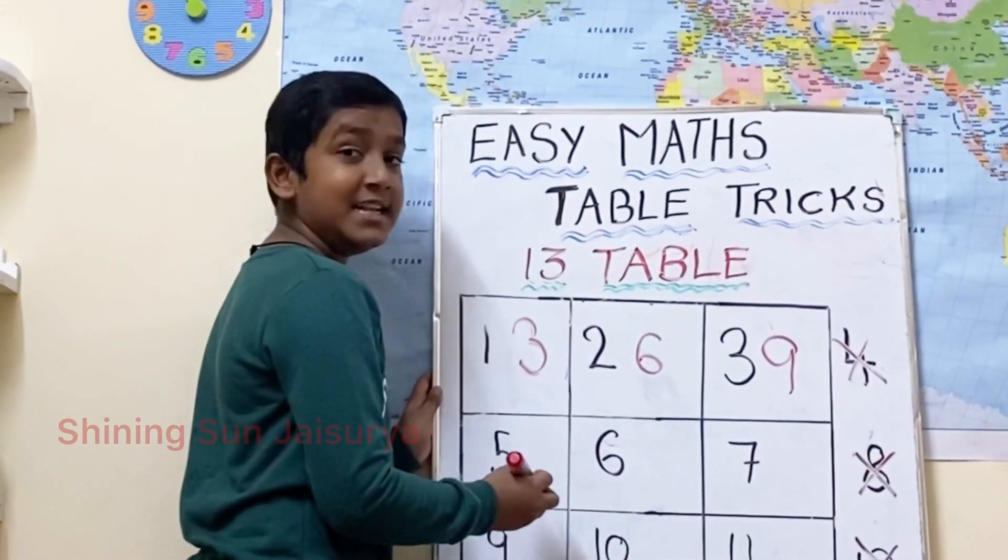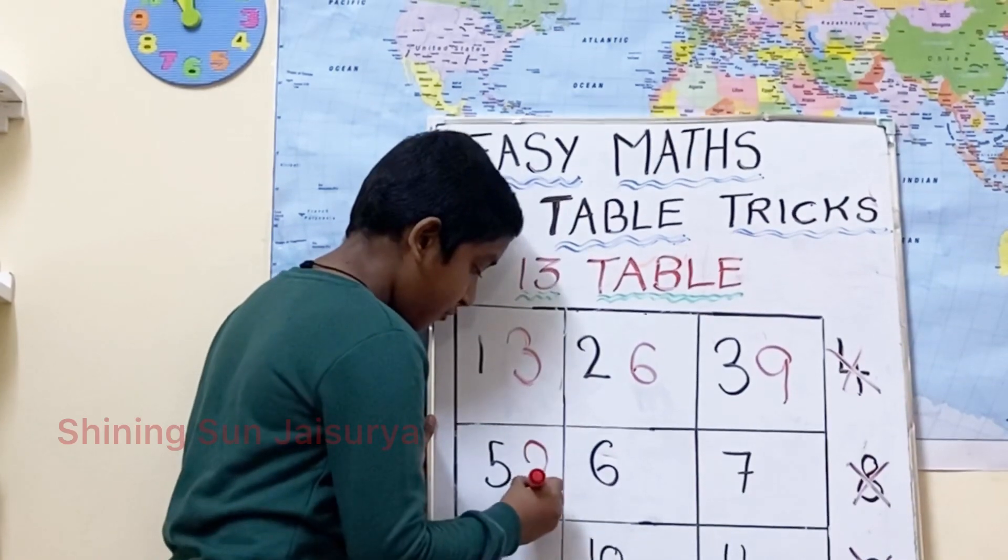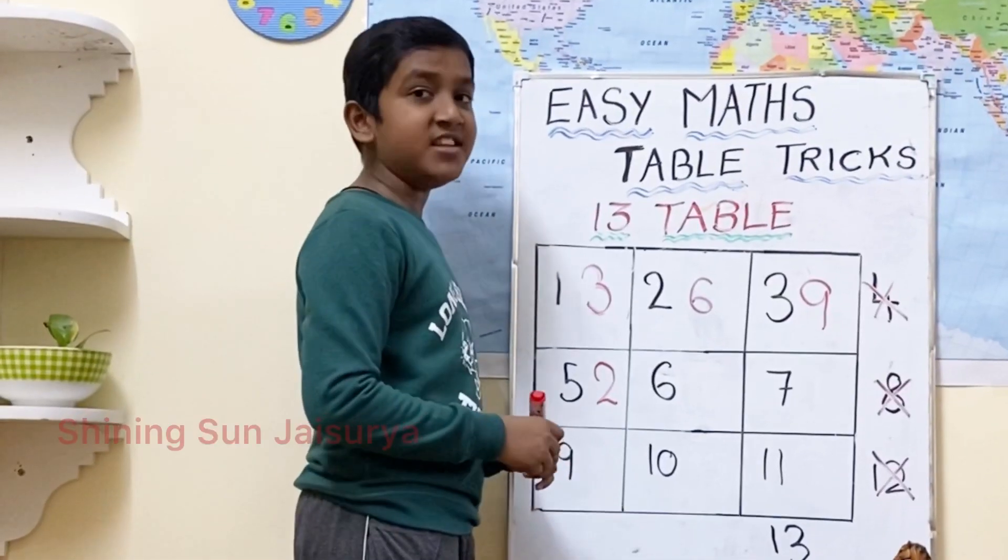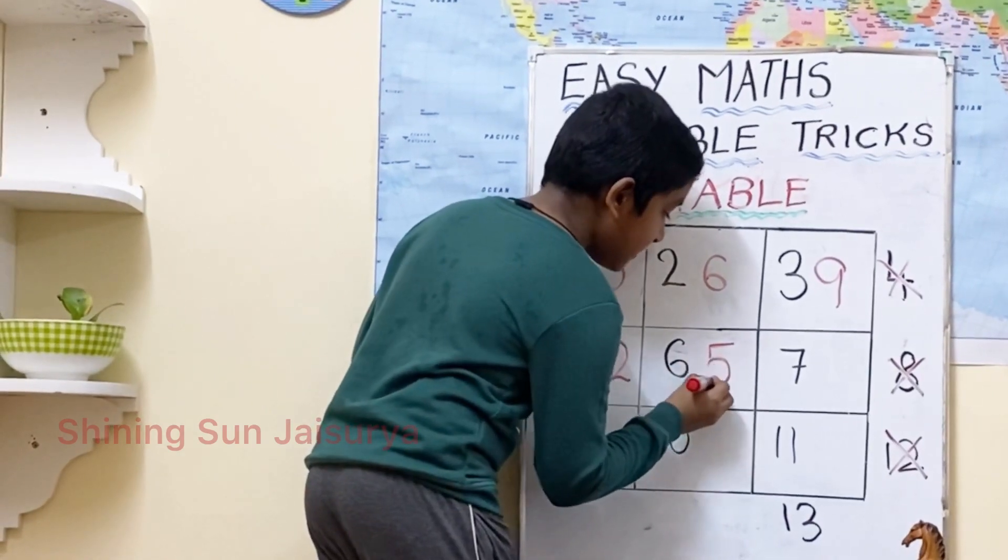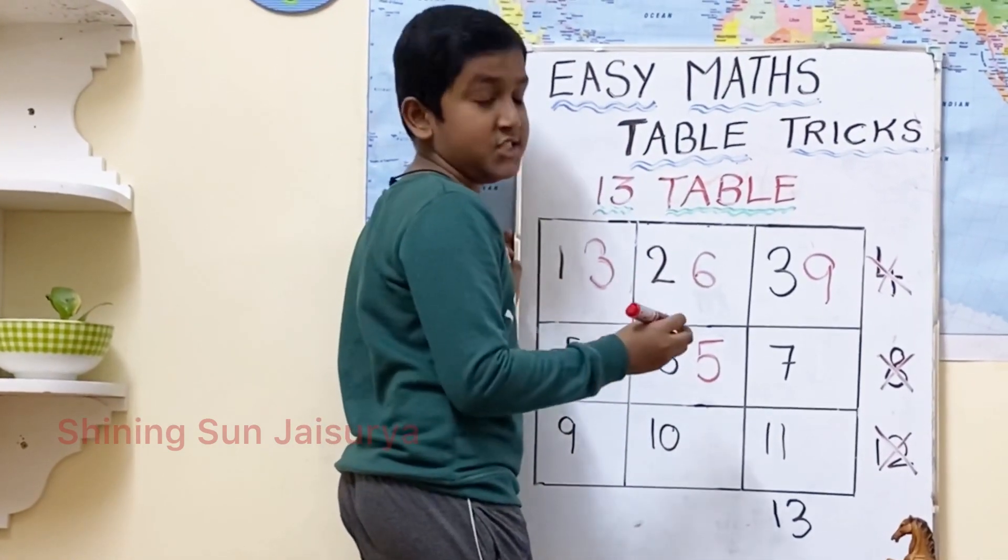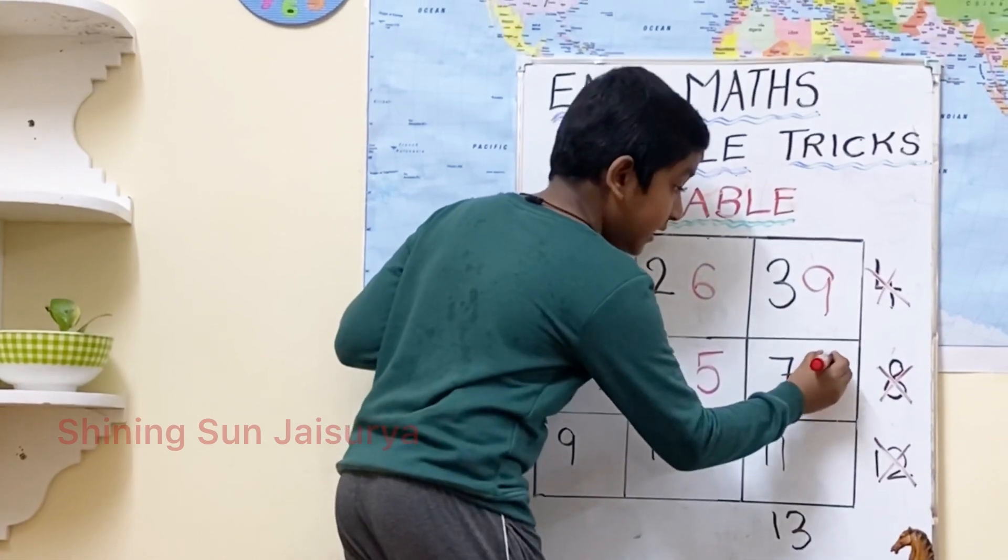For 12, just write 2. For 15, just write 5. And for further numbers, just write the 1's digit. For 18, 8.